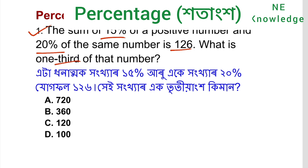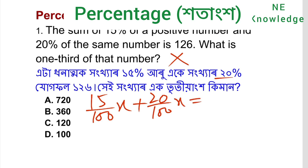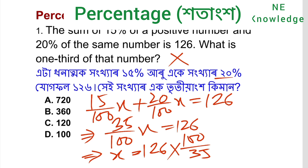What is one third of that number? The sum of 15% of a positive number and 20% of the same positive number gives us 35% of that positive number.